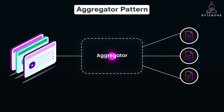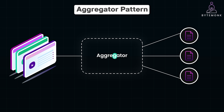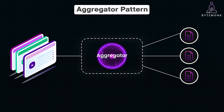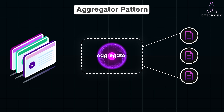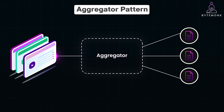Here is a step-by-step look at how it operates. The aggregator service receives a request from the client — this could be a web application, mobile app, or any other consumer. It then sends out requests to multiple underlying microservices, each responsible for a specific part of the overall task. Once all the services respond, the aggregator compiles and processes the data, merging it into one cohesive response. This may involve data transformation, formatting, or applying business logic. Finally, the aggregator sends this unified response back to the client, providing all the needed information in one go.